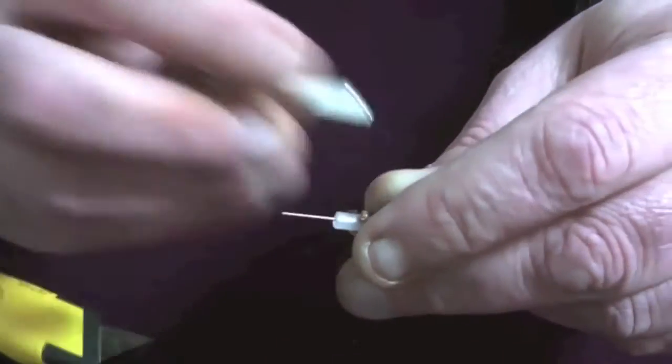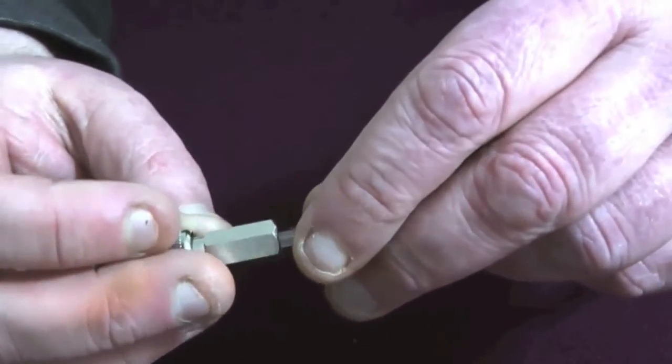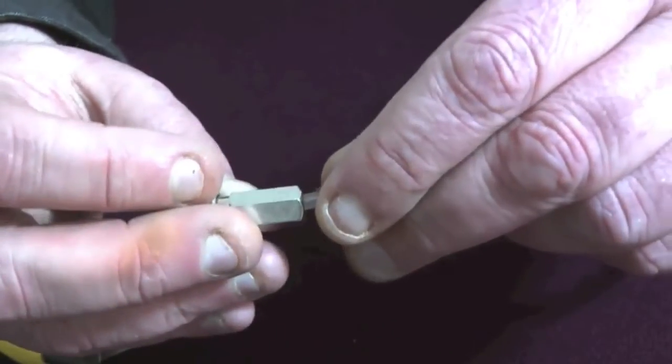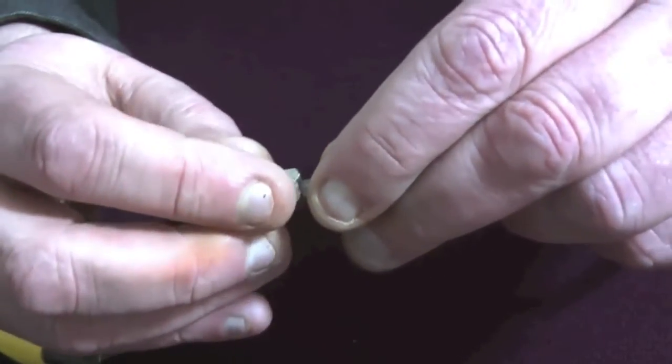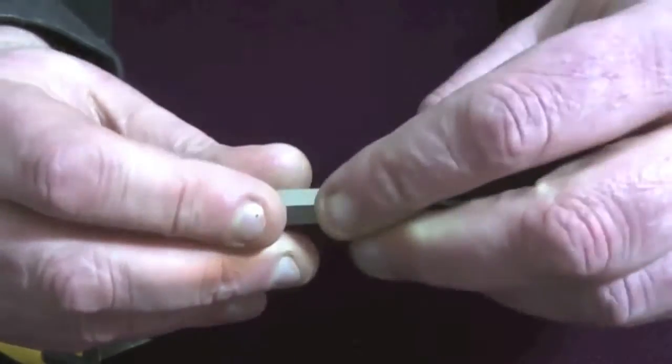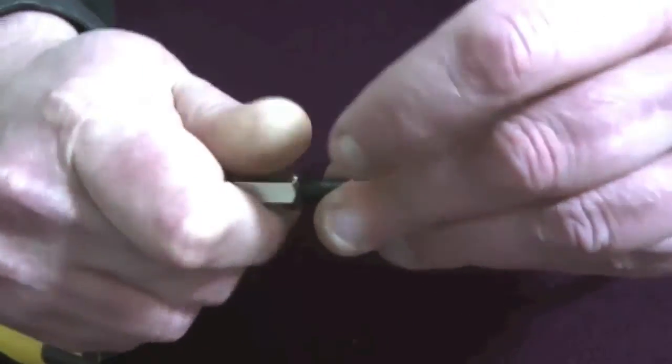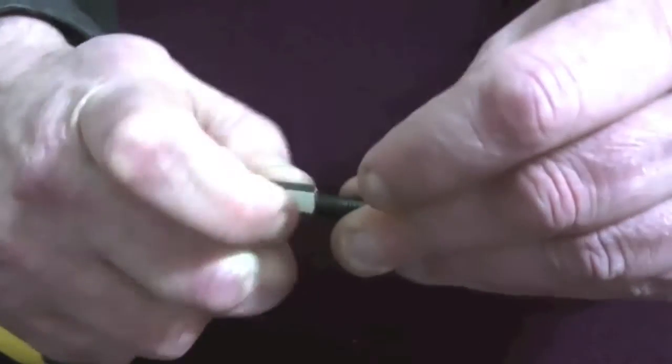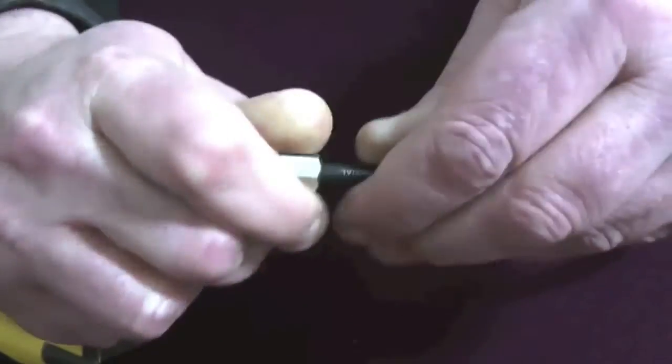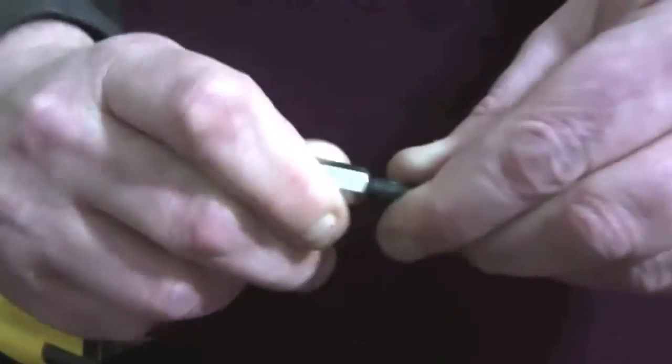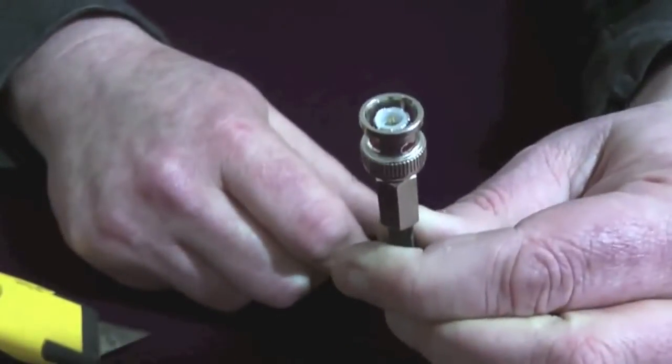This will just push in. You'll feel it locate into the center pin of the BNC, and you'll actually feel it click into place. Then simply twist it over the outer shield, and that is your BNC twist-on connection connected.